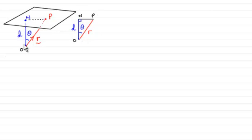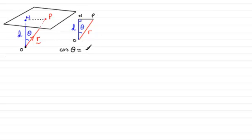I've drawn this triangle out, and we can see that by trigonometry the cosine of angle theta compares the adjacent side D with the hypotenuse R — R being the magnitude of this position vector OP. Now remember that ON is perpendicular to the plane, and that length is D.